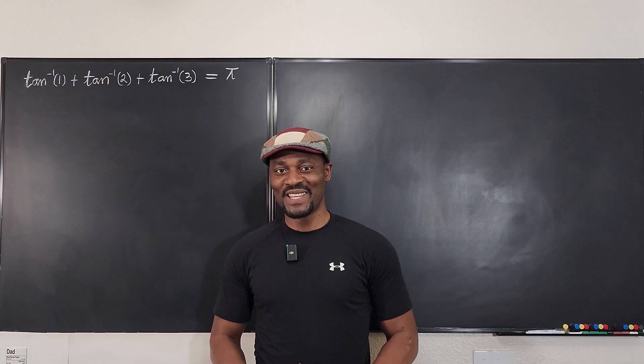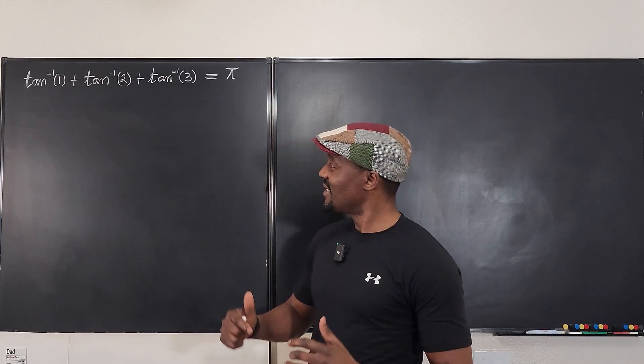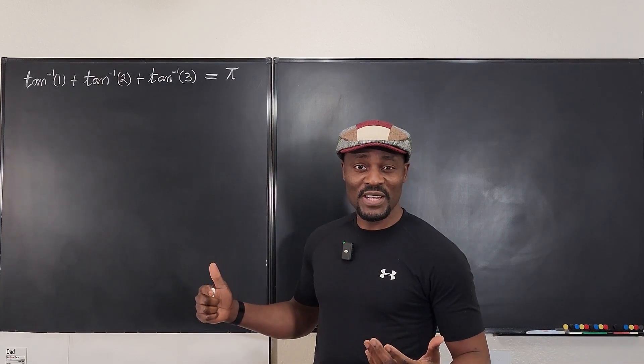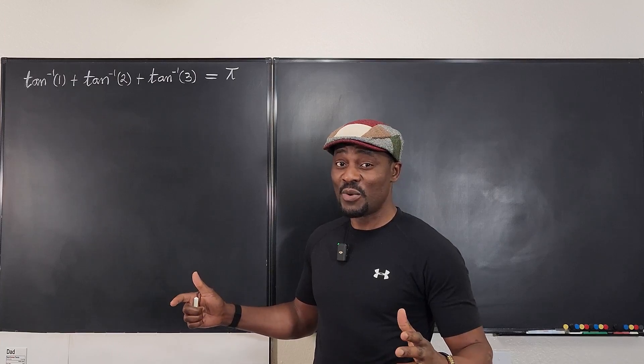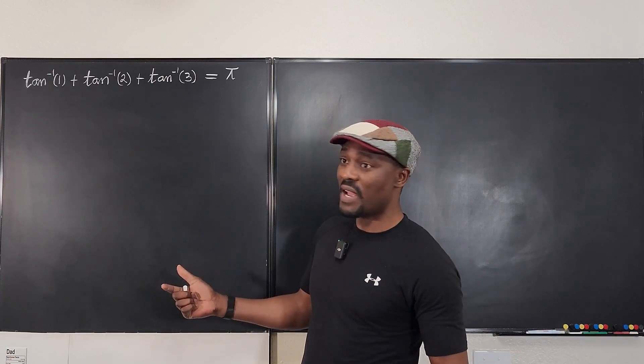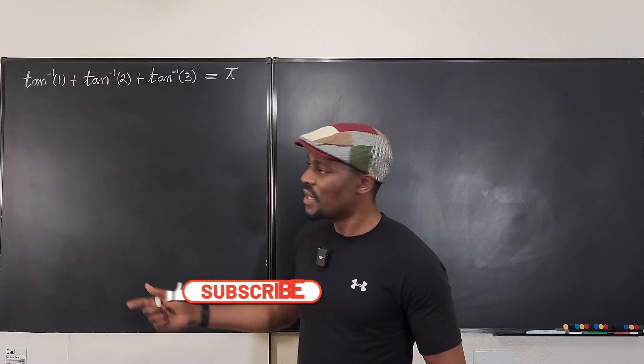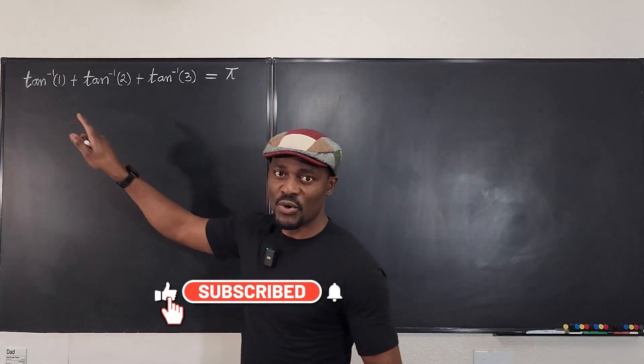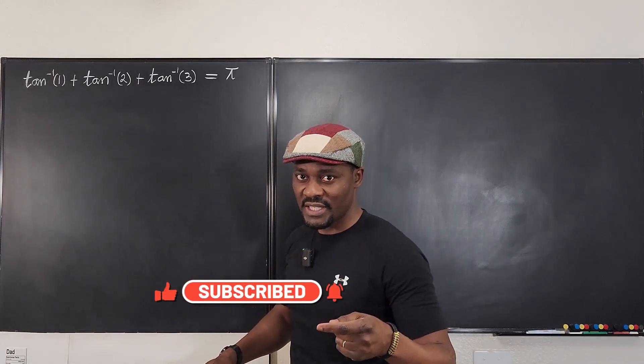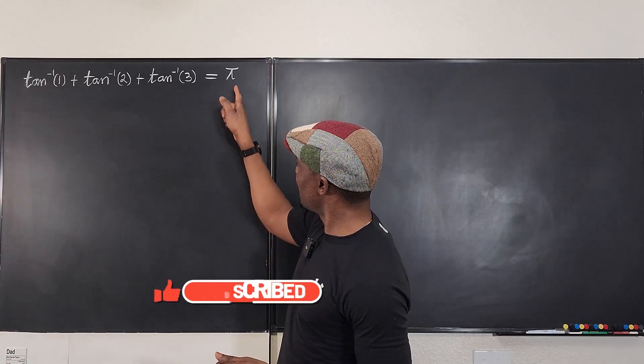Hello, welcome to another video. This is, I don't know if I should call it a trig equation. It's not an equation because we're not solving for anything. We just want to show that when you add arctan(1) to arctan(2) to arctan(3), your answer is π.